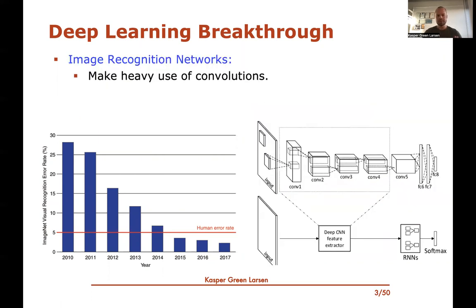In image recognition networks, one of the most popular ingredients is what's called a convolution. Here's a picture of a deep neural network architecture with a bunch of convolutions — deep convolutional neural net feature extractors. We haven't yet talked about what these are, but this is what we'll cover in this video.